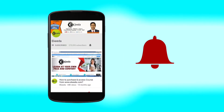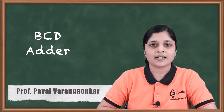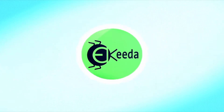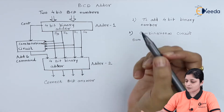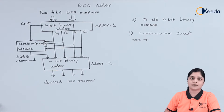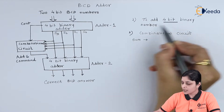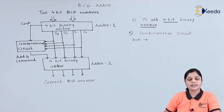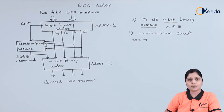Hello friends, now we are going to discuss the BCD adder. Our heading is: adding two BCD numbers with the help of a BCD adder. You can see here the diagram of the BCD adder. Here we have to give four-bit binary numbers to add, to get the BCD sum. A and B are the two four-bit numbers.